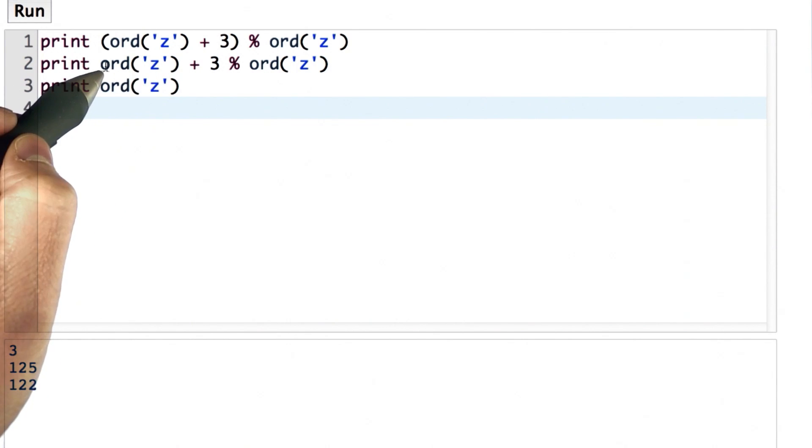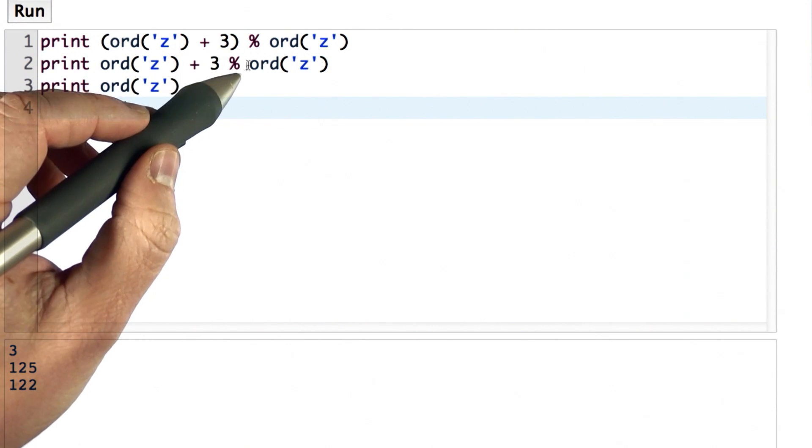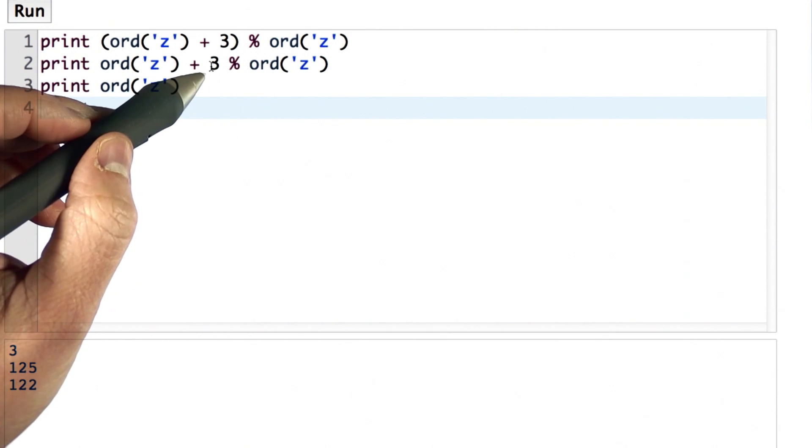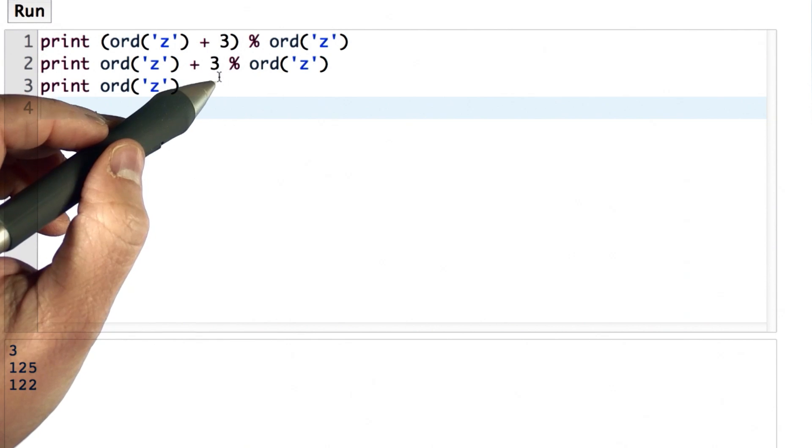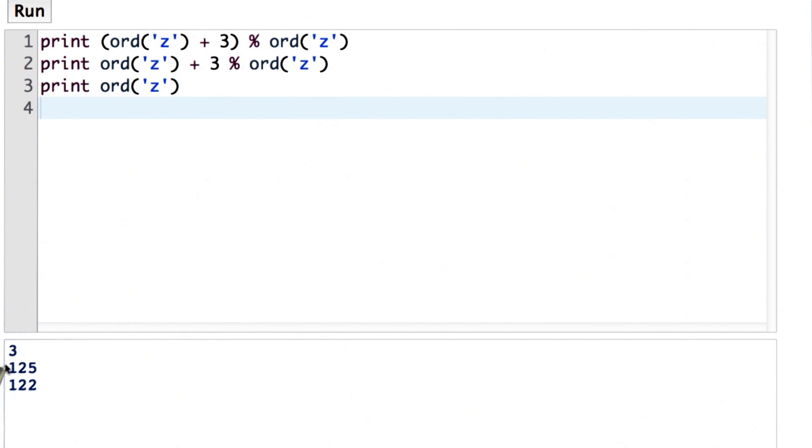And the reason we get 125 is the value of ord of Z by itself is 122. So it's 122, which is ord of Z, plus 3 mod ord of Z, which is 3 mod 122, which is 3, which is why we got 125 when we evaluated this without the parentheses.